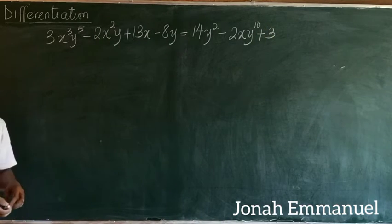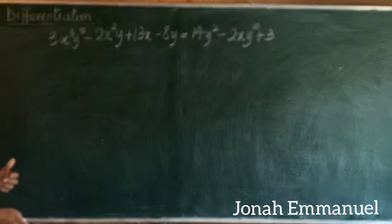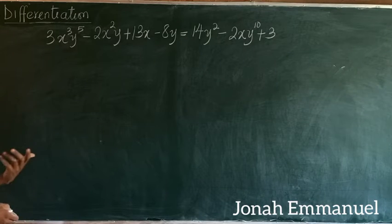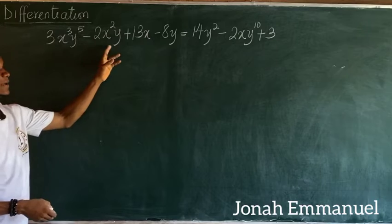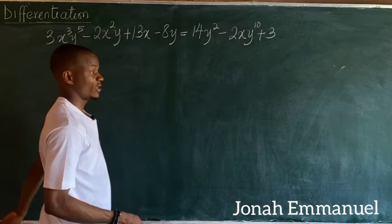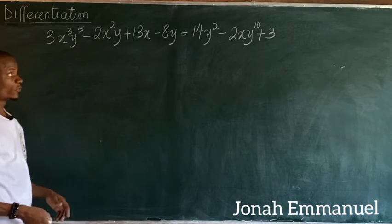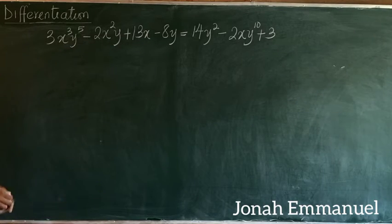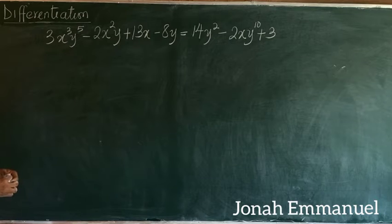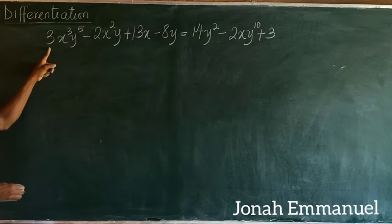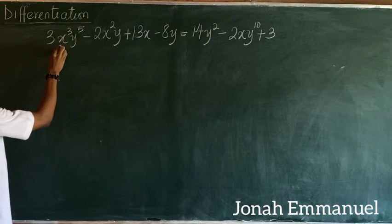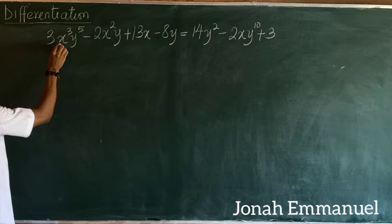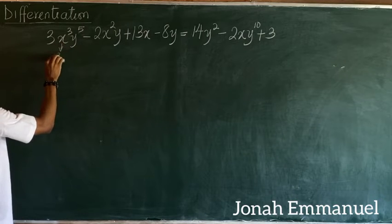I'll differentiate this using implicit differentiation because, as you can see, x and y are placed simultaneously here. Starting from the first term, if I differentiate x³ it gives me 3x².